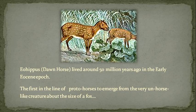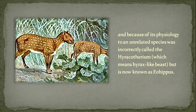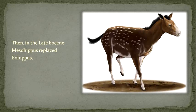Eohippus, the dawn horse, lived around 50 million years ago in the early Eocene epoch — the first in the line of proto-horses to emerge. It was a very unhorse-like creature about the size of a fox, and because of its physiology to an unrelated species was incorrectly called the Hyracotherium, which means hyrax-like beast, but is now known as Eohippus.